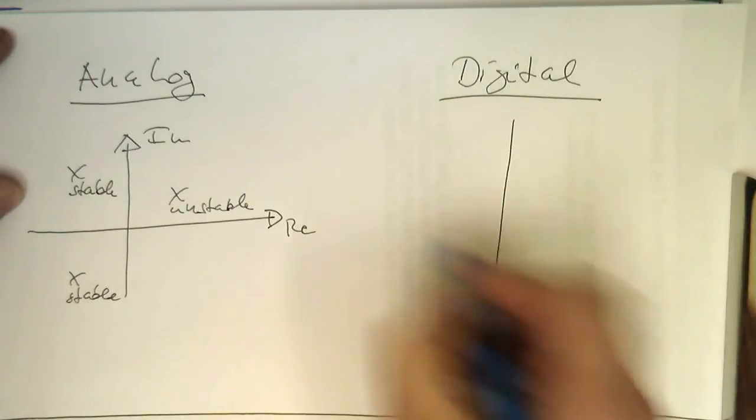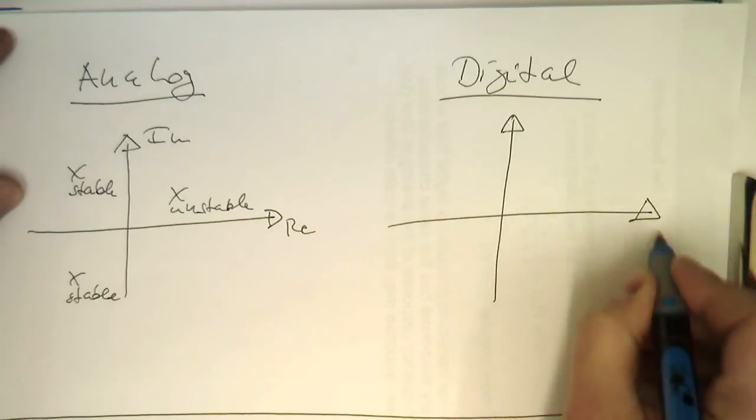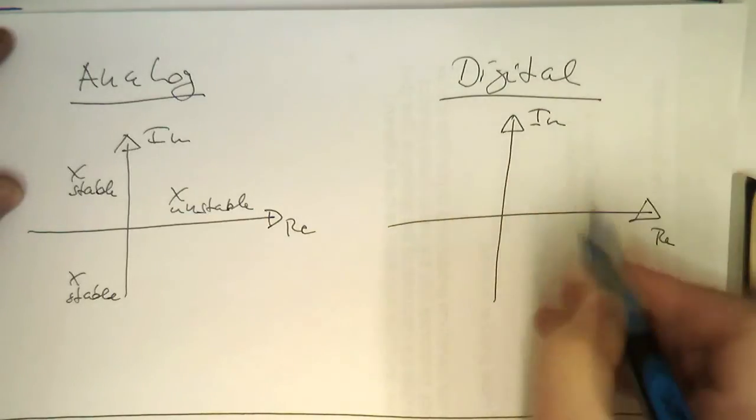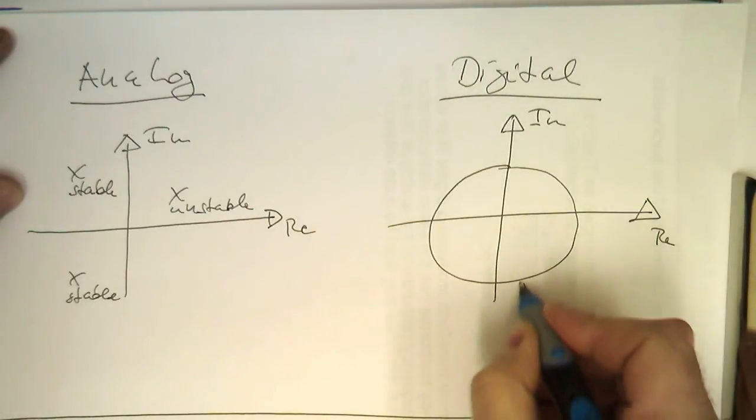So in the digital domain, our poles are mapped in the following way. So it's again real and imaginary, and that's our unit circle.